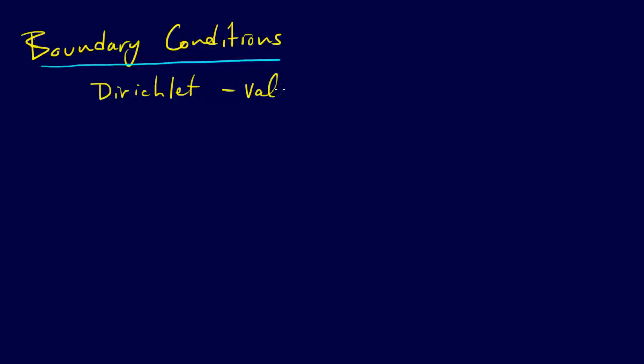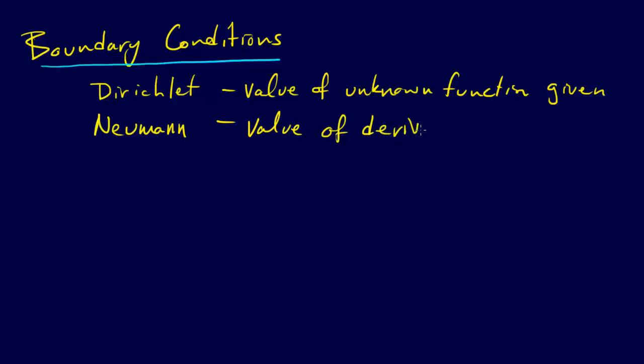Dirichlet is the value of the function, a known function given at whatever the points are. And we have Neumann, which is where the value of the derivative or the derivatives is given. So those are our boundary conditions.